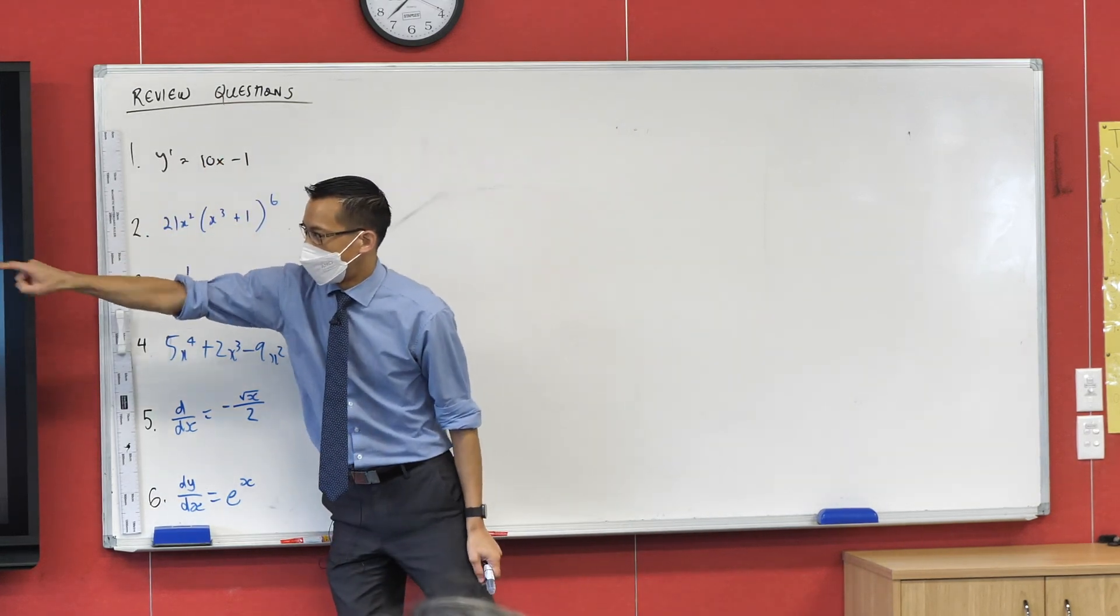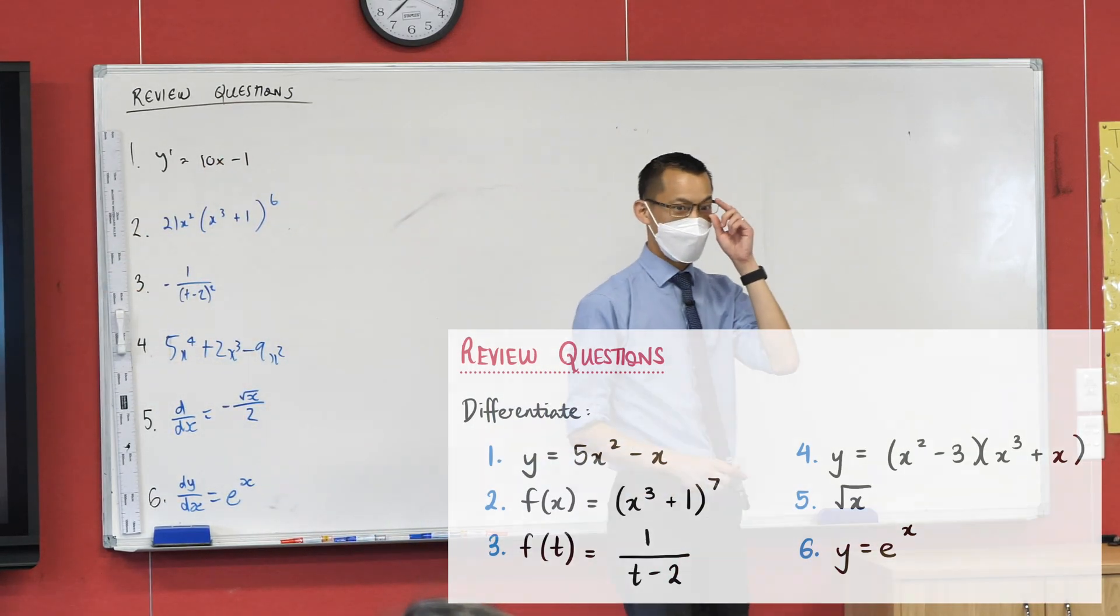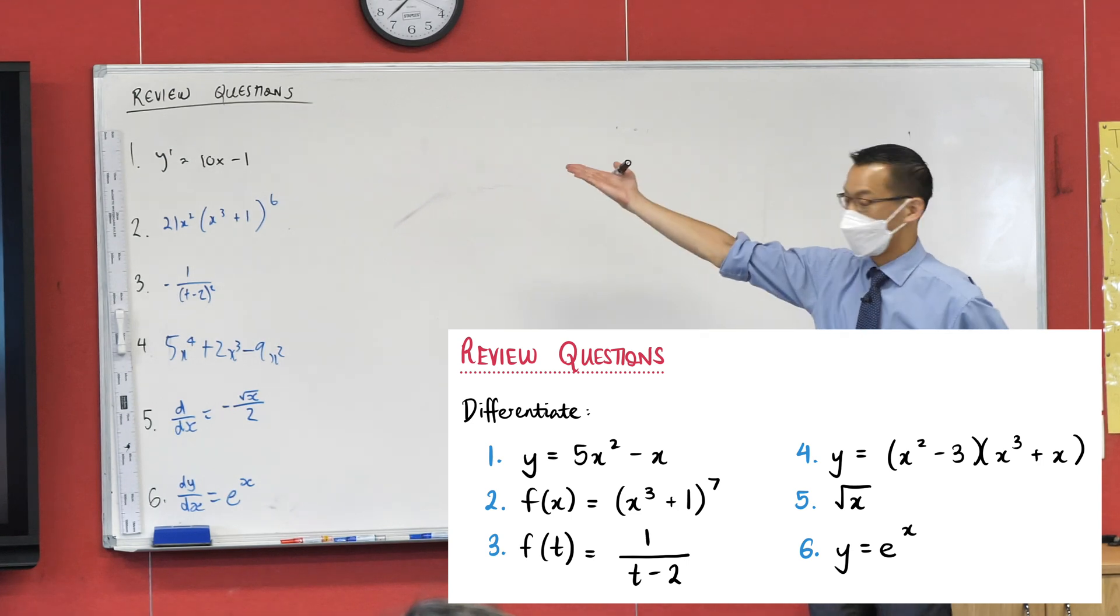Question one. The function is y equals 5x squared minus x. Can I get some agreement?